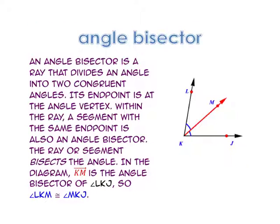An angle bisector is a ray that divides an angle into two congruent angles, with its endpoint at the angle vertex. A segment with the same endpoint is also an angle bisector — the ray or segment bisects the angle. In the diagram, ray KM is the angle bisector of angle LKJ, so angle LKM and angle MKJ are congruent.